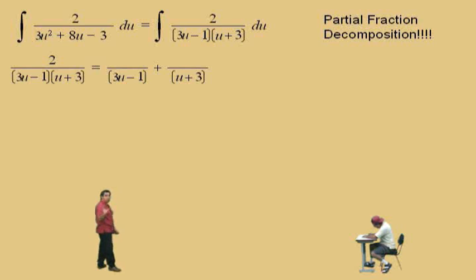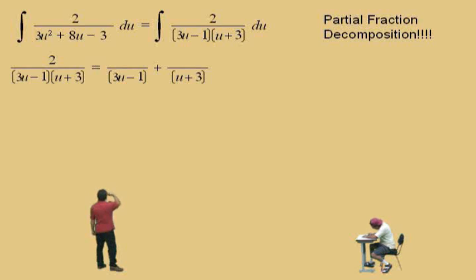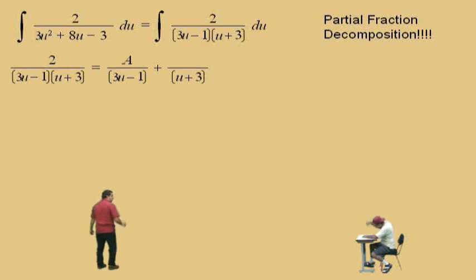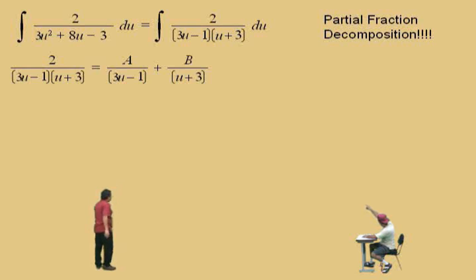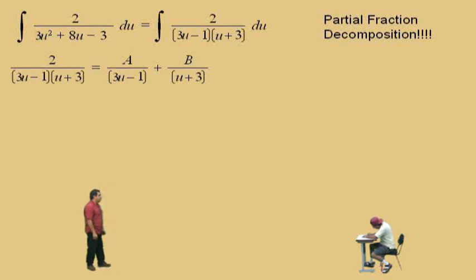Now remember, when you do partial fraction decomposition, if your denominator is first degree, then your numerator must be one less degree, which in this case is degree zero, so we'll put A to represent that constant. A zero degree polynomial is a constant. Similarly, with the u plus 3, the constant above should be B. Our goal is to solve for A and B.